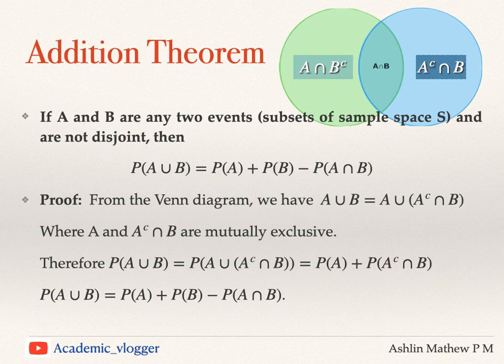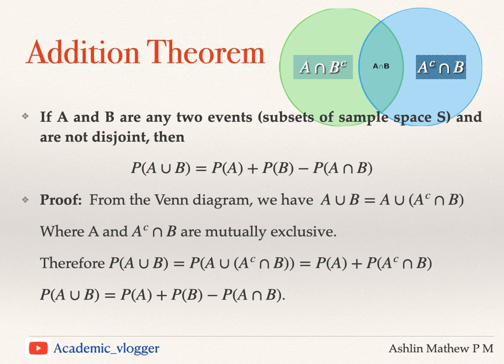This is clear from the Venn diagram. The green circle is event A and the blue one represents event B. They are not disjoint — they have some common space, which is A intersection B, the overlapping region. The green part excluding the intersection is A intersection B-complement, and the blue part excluding the intersection is A-complement intersection B.